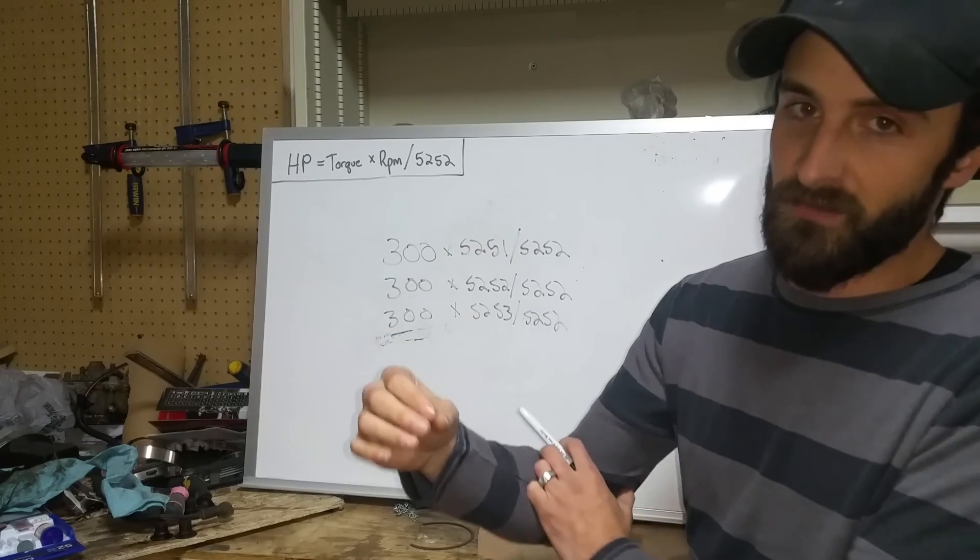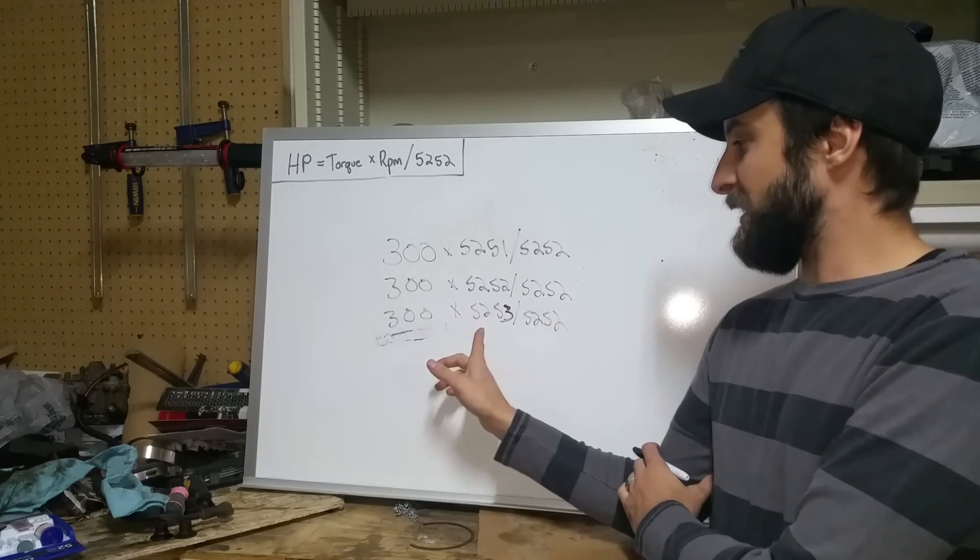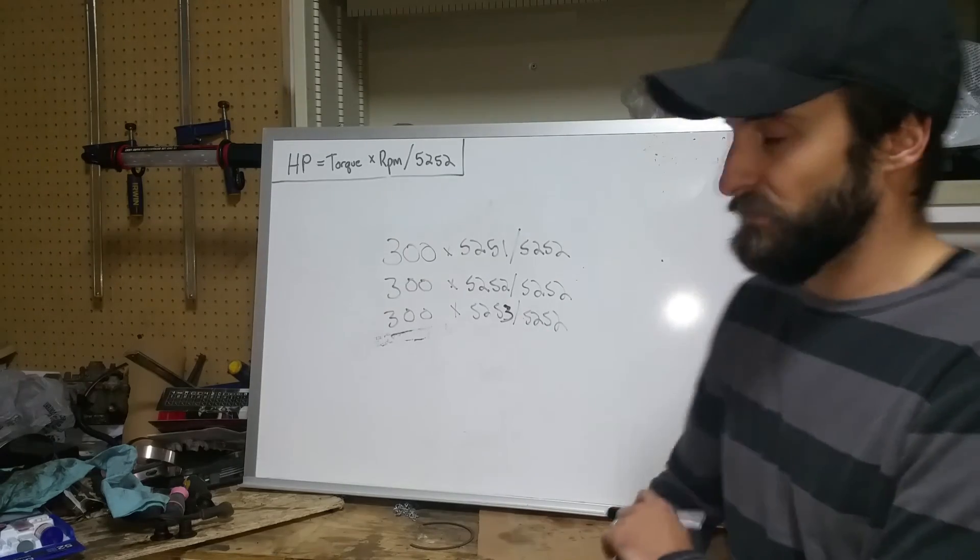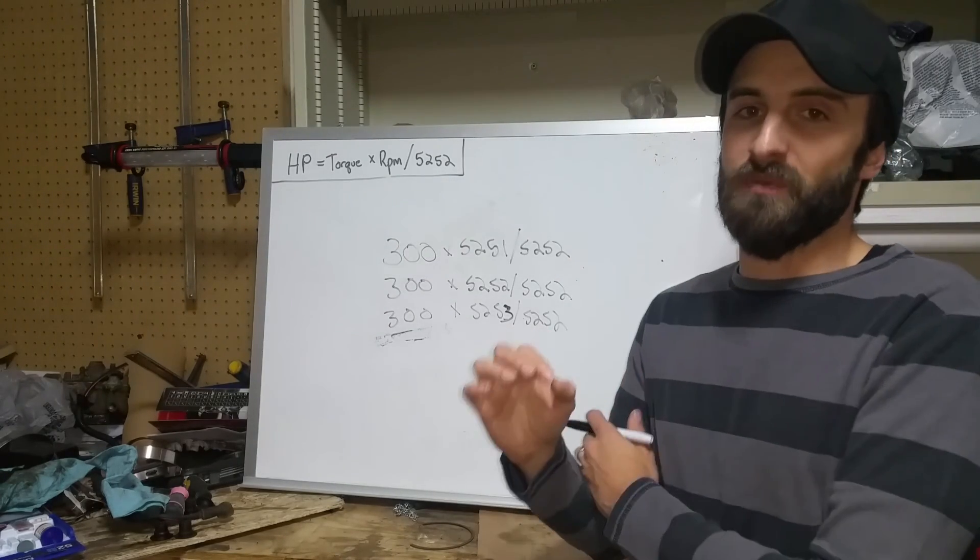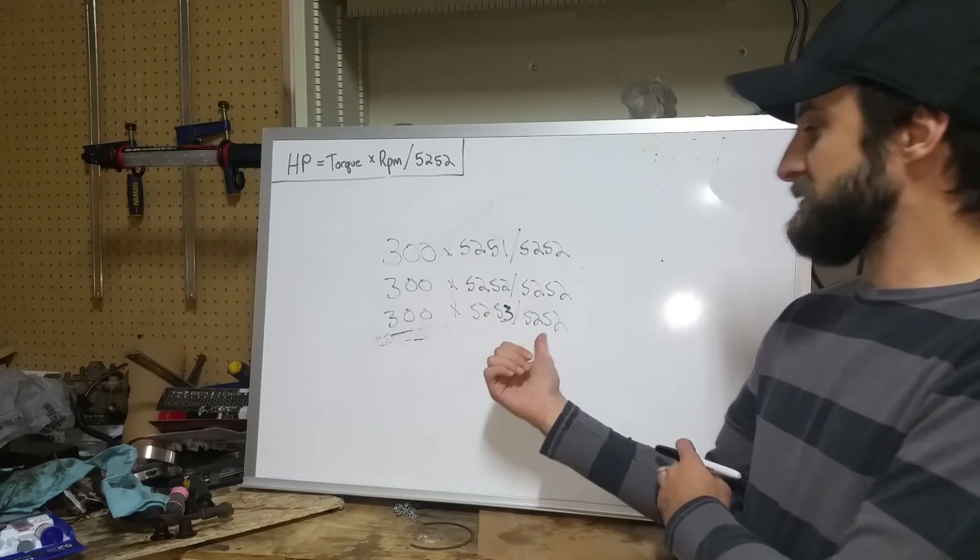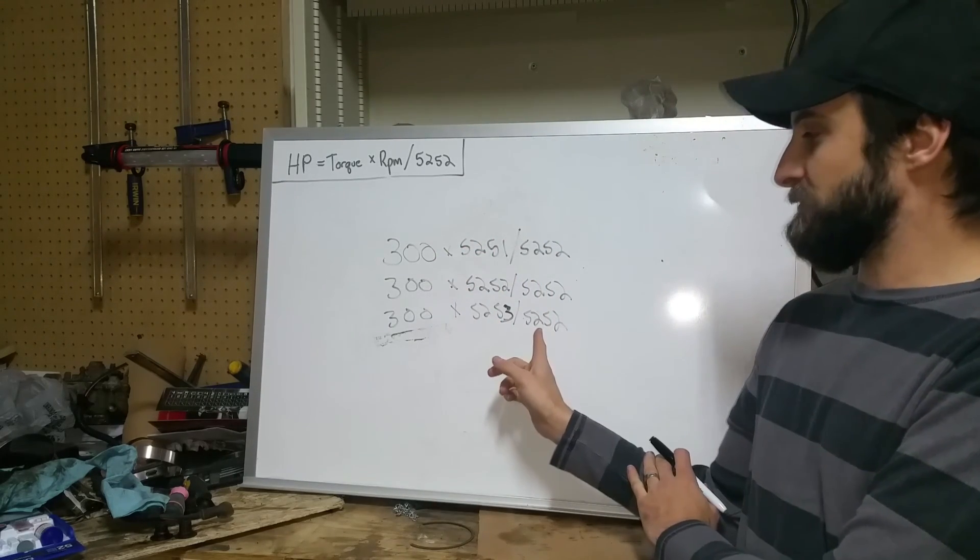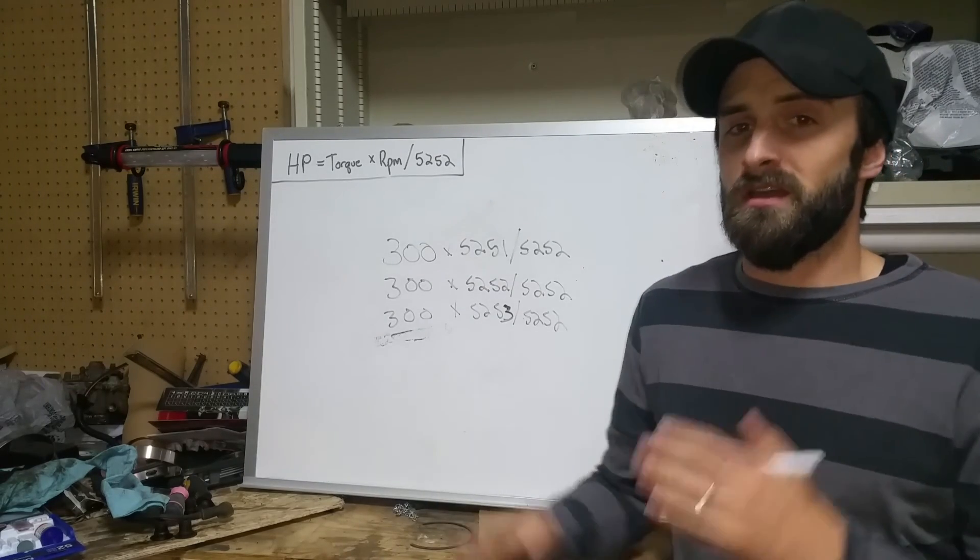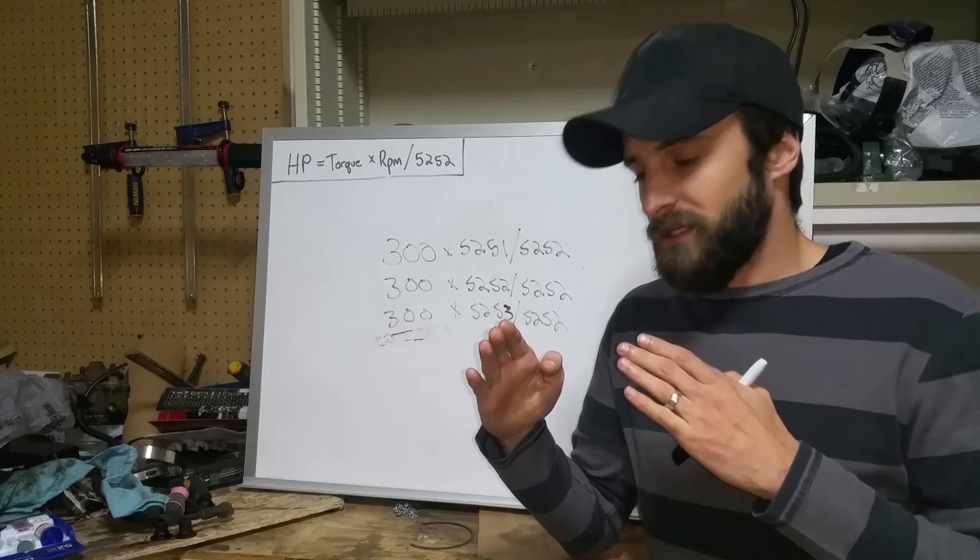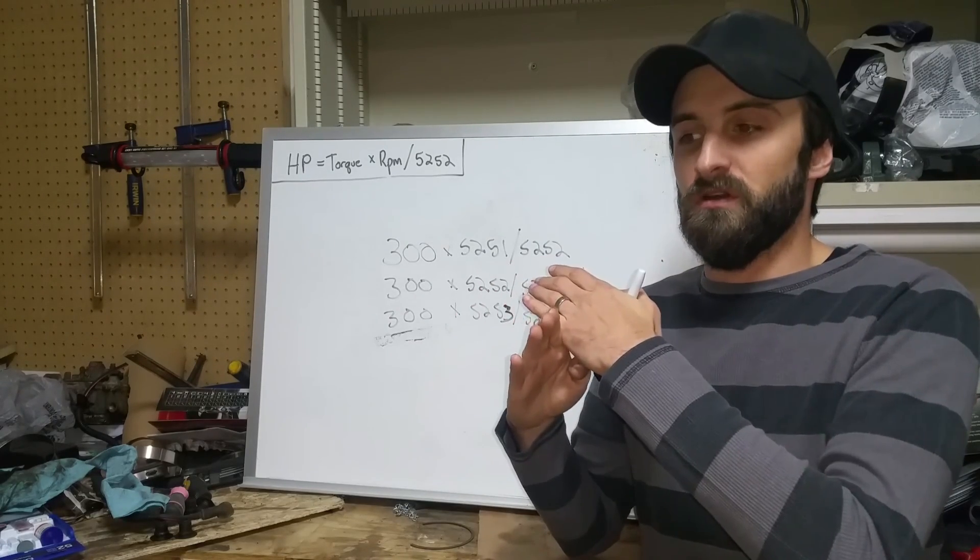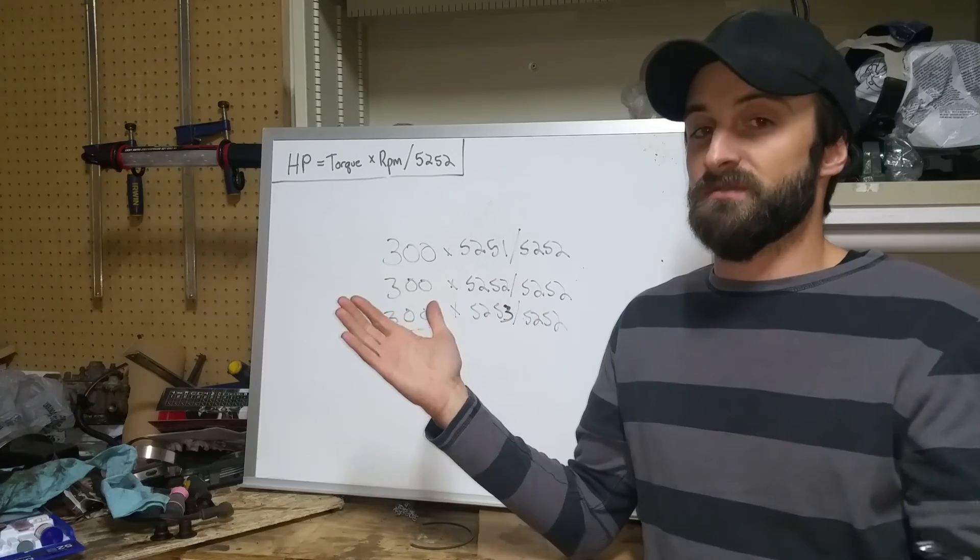And you go 1 RPM higher, 300 multiplied by 5,253 divided by 5,252. Now your horsepower just became a little bit higher than your torque because of this calculation. Now you're dividing by a little bit less than your RPM. So that's why your horsepower is crossing above your torque curve at 5,252 every time because math.